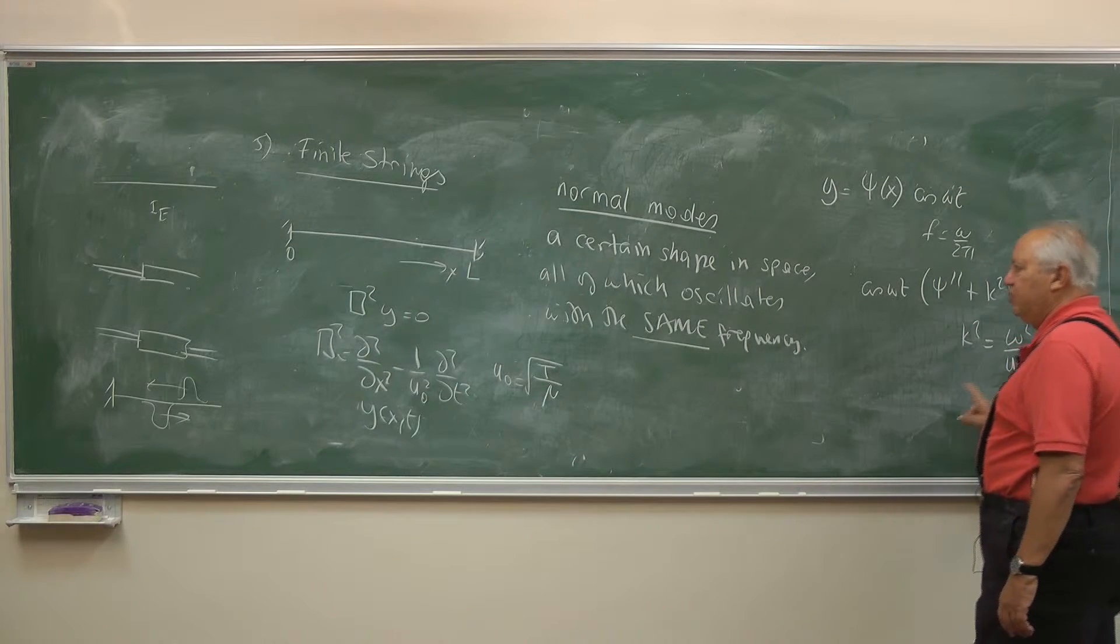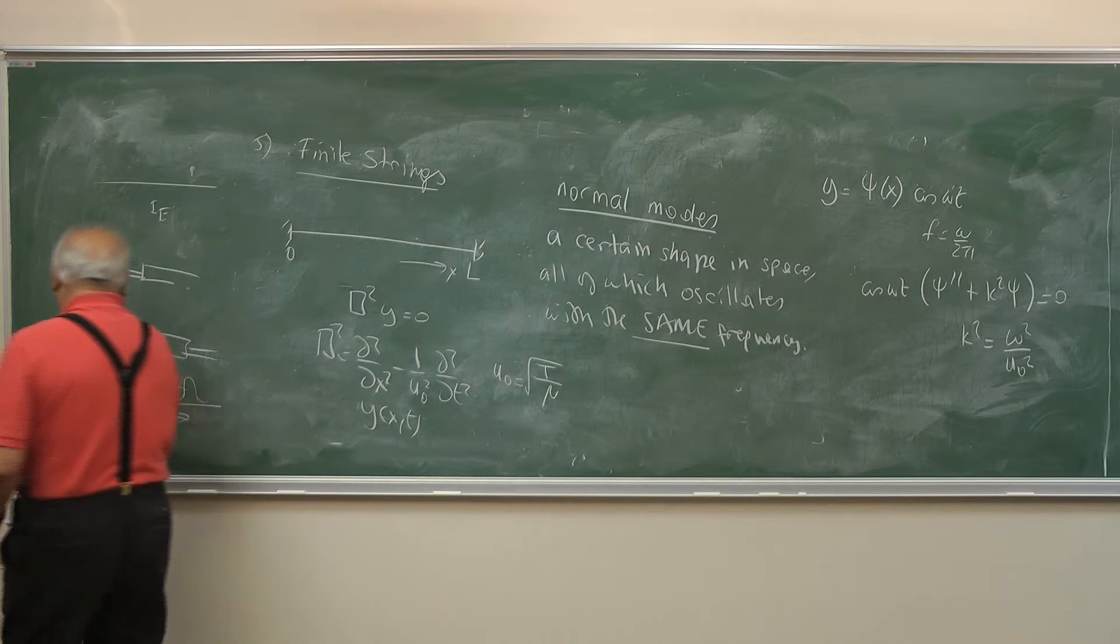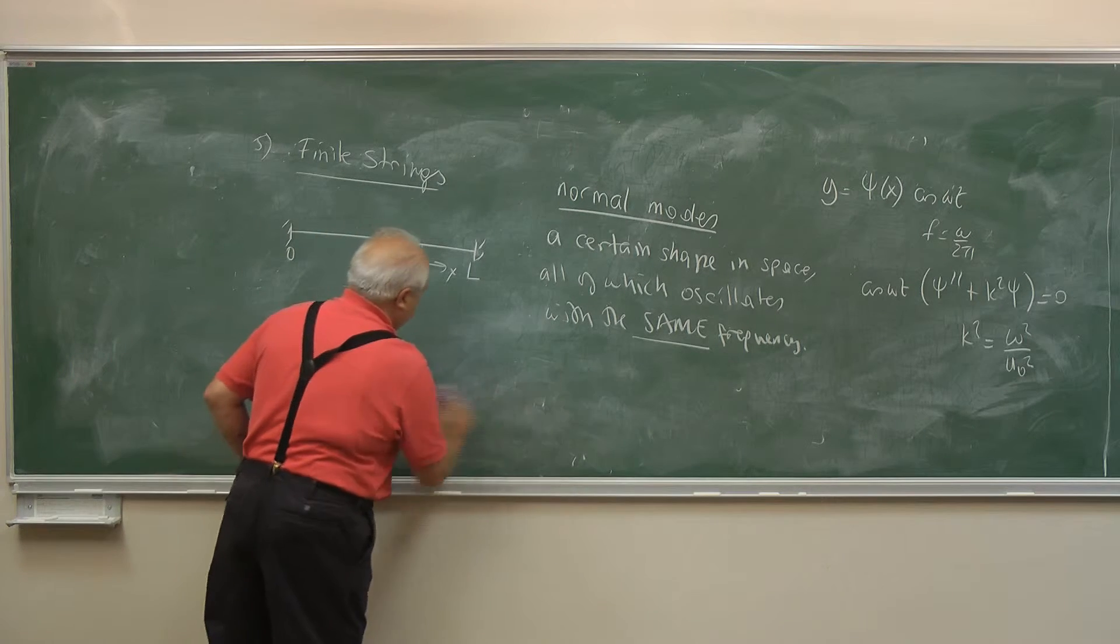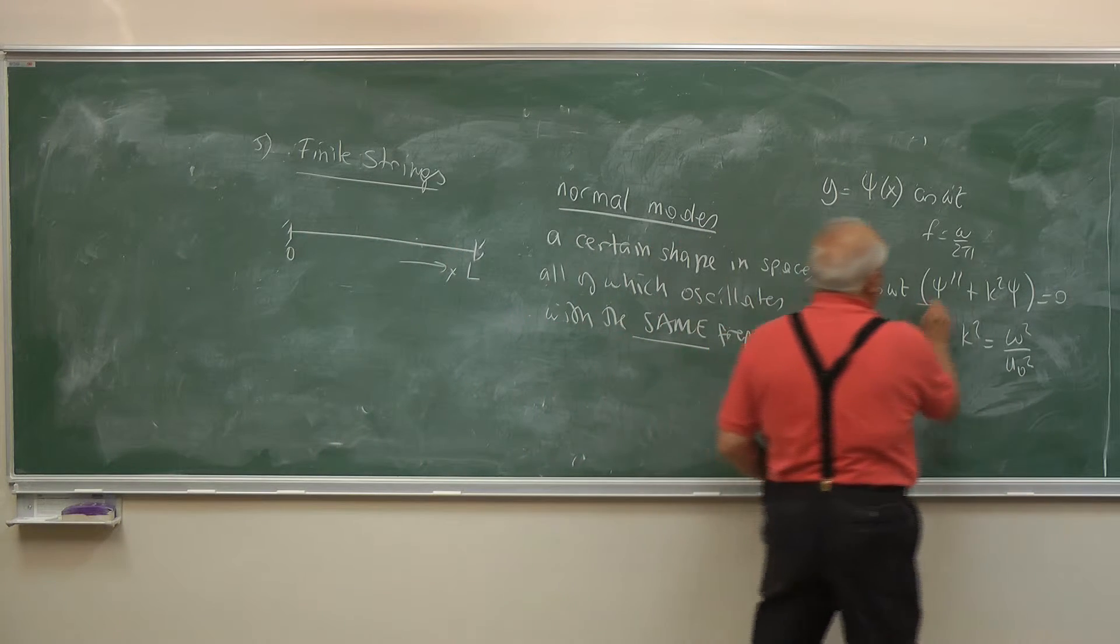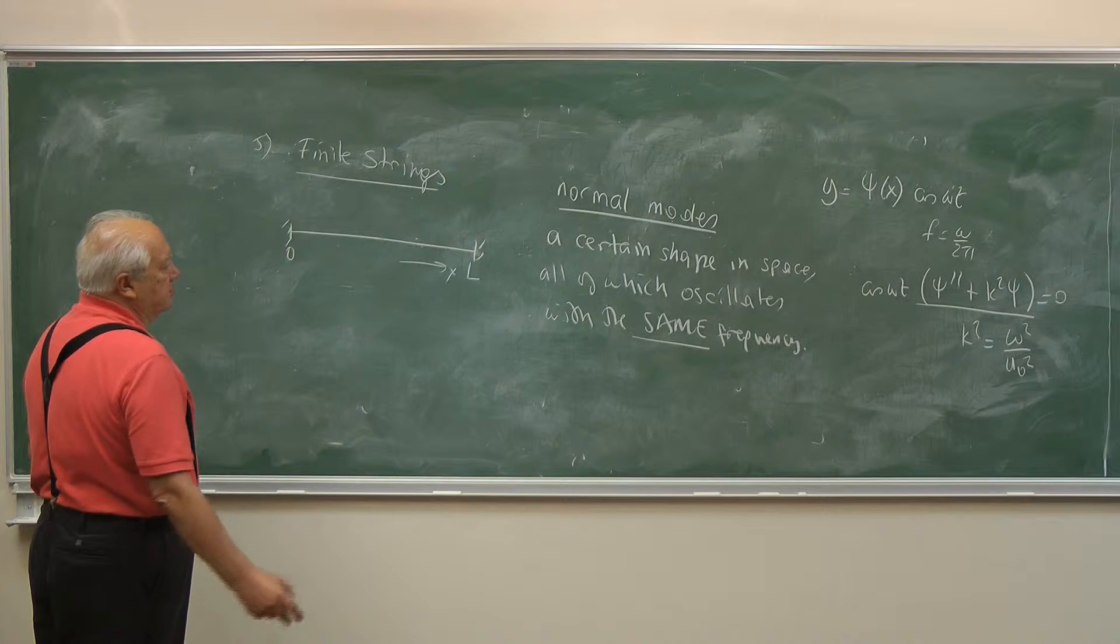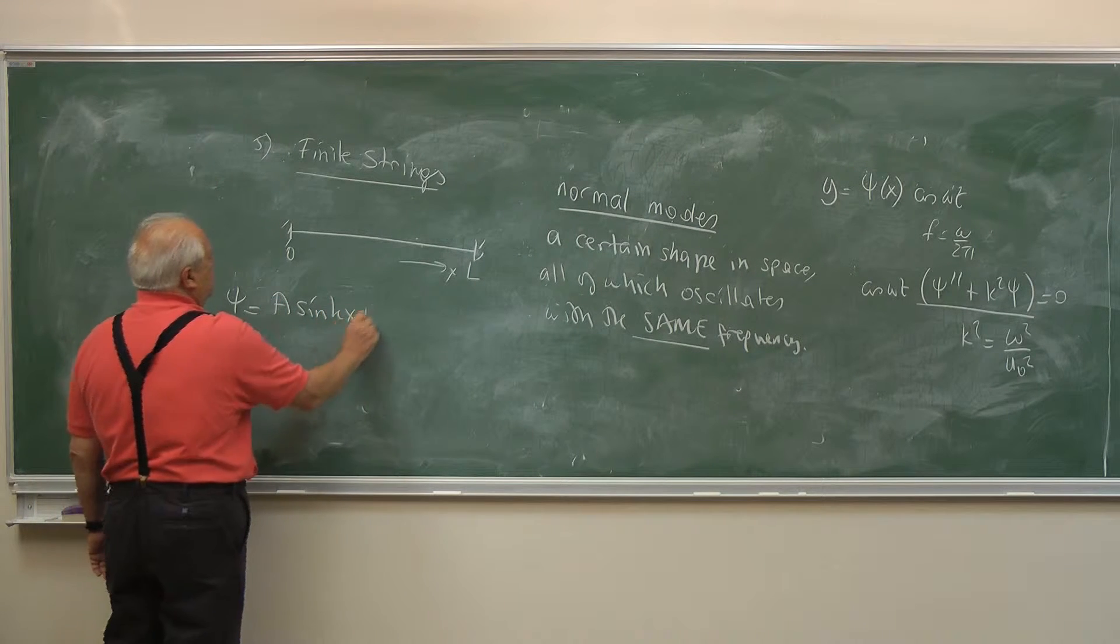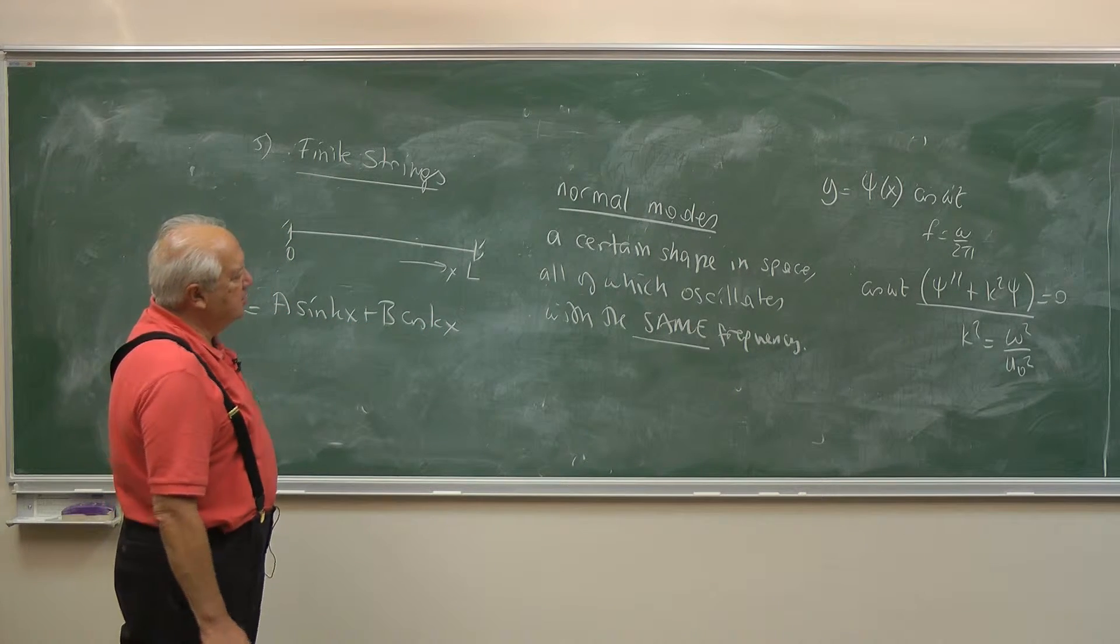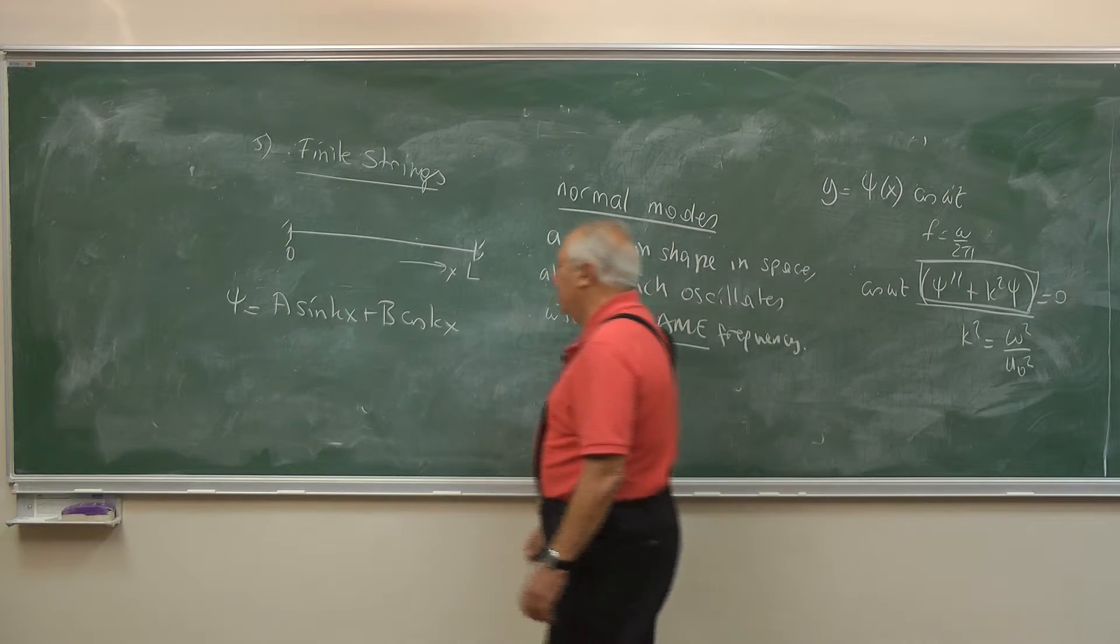This u₀ is the speed of the disturbance along the string. I am erasing all this. We have such limited blackboard space. So this is the equation we will solve. This is a second order differential equation, and it has simple solutions like A sin(kx) + B cos(kx). Both sine and cosine are solutions to this equation, which is the Helmholtz equation in one dimension.